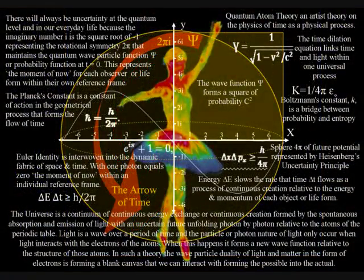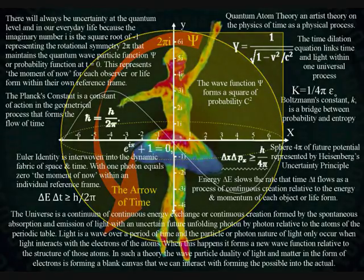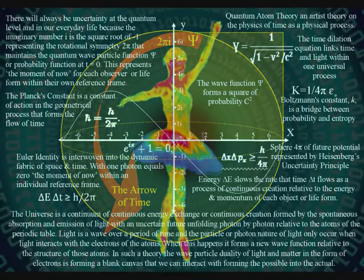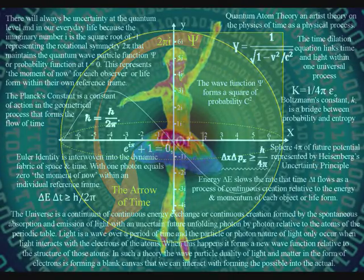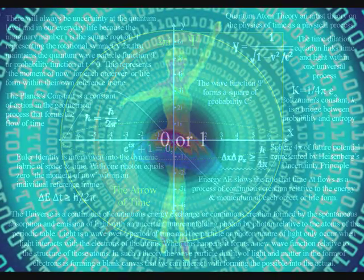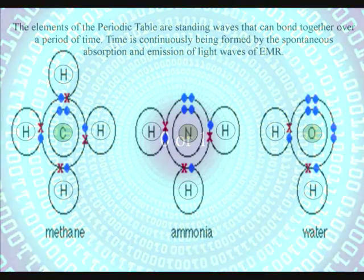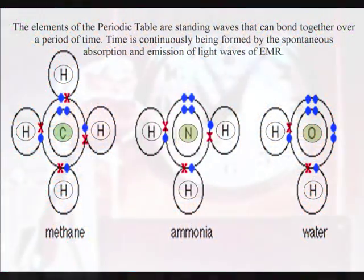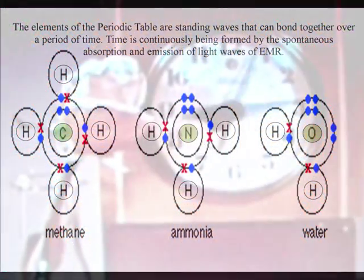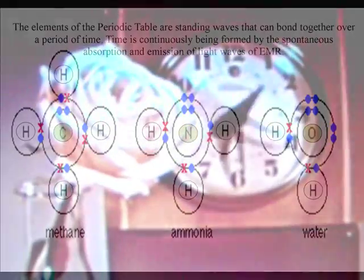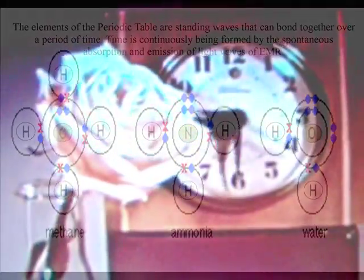The wave-particle duality of light and matter in the form of electrons is forming an interactive process similar to the bits or zeros and ones of a computer, with the atoms of the periodic table forming standing waves in time with the absorption and emission of light.